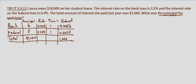Now we can set up our system of equations. We know that the total of the two principals is $18,000, so B plus F equals $18,000. And we know that the rate times the principal for the bank loan plus the rate times the principal for the federal loan is going to equal the total interest, which is $1,066.